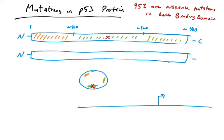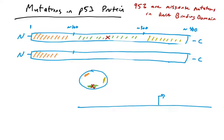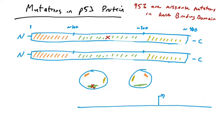One nucleotide change leading to one amino acid change can ruin the function of a p53 protein — it won't bind a promoter or act as a transcription factor. But that's okay, right? The cell has the other copy of p53. We have two alleles of p53, one on the maternal chromosome and one on the paternal, and the other one should be able to work just fine. Well, it turns out, no — and let's see why.